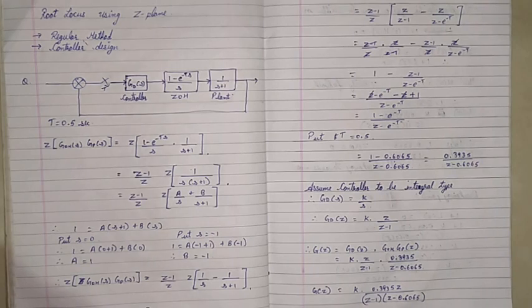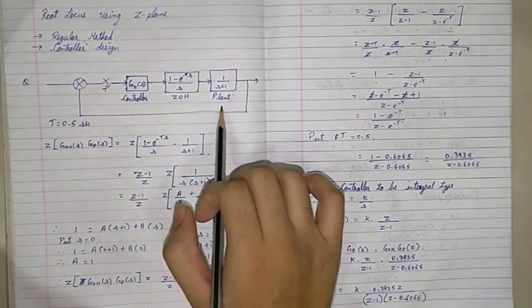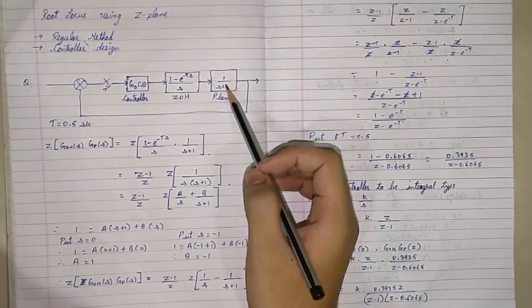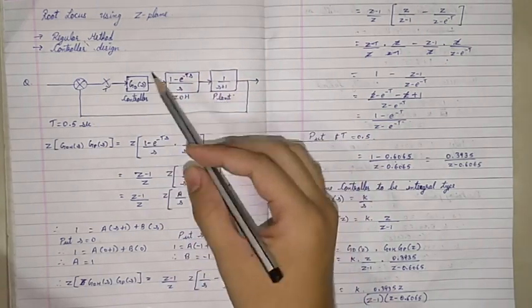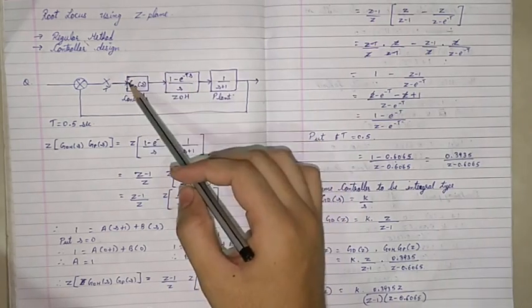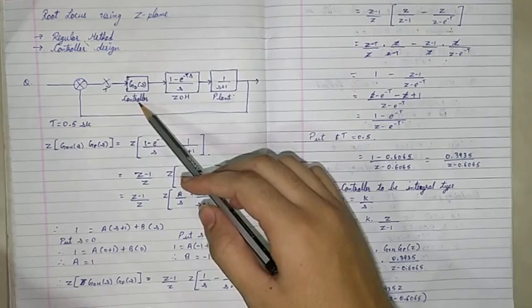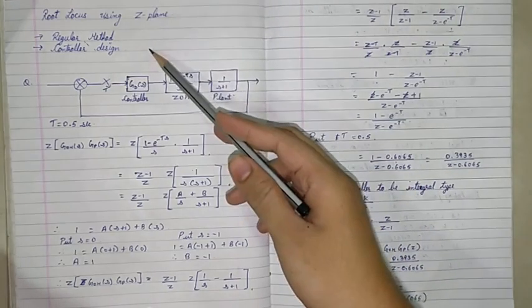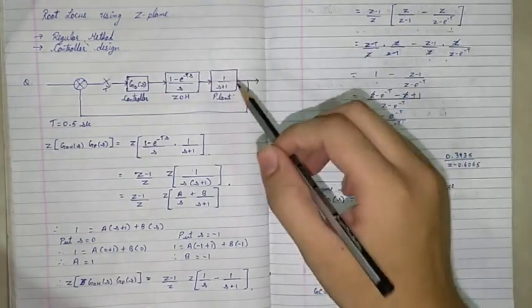There are two methods for finding a root locus. One is the regular method and the other is controller design. As you can see in this block diagram, there are three blocks: a controller, a zero order hold, and a plant. The controller design will be done in the next video. In this video we will only cover the regular method.